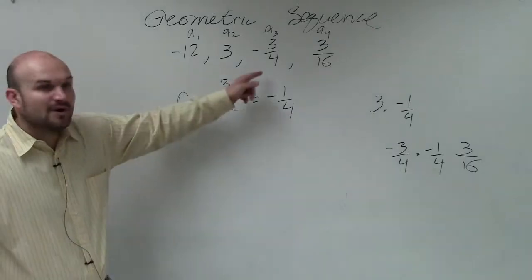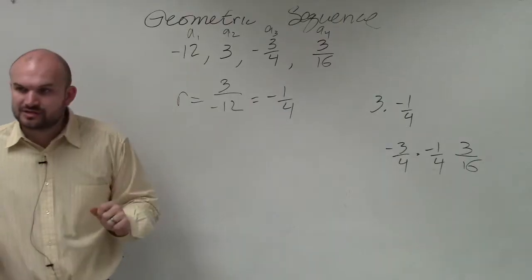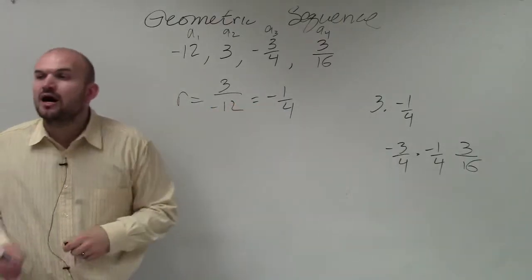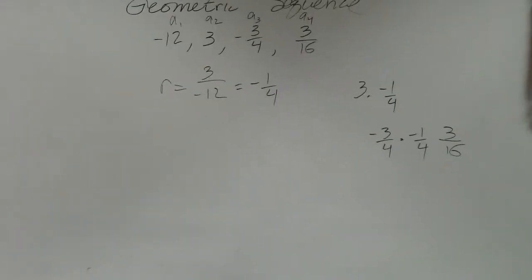So guess what? The common ratio is consistent between all the terms. So this is a geometric sequence with a common ratio of negative 1 fourth. Notice how the terms are getting smaller and smaller, right? So it has to be the ratio.